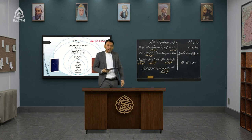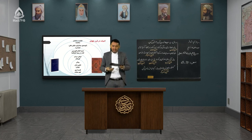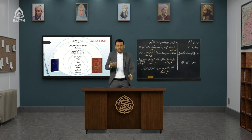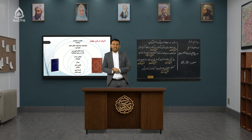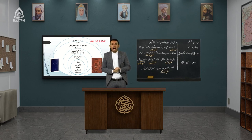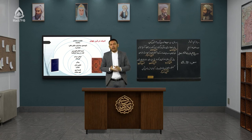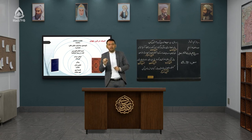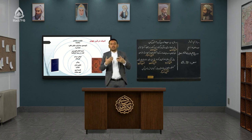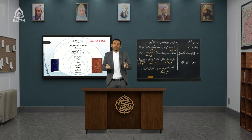رودکی بلخی داستانی دارد مربوط به قصیده بوی جوی مولیان. گفته شده که در دوره سامانیان، امیر اسماعیل بن نوح سامانی — یکی از امرای بزرگ سامانیان — که پایتخت حکومت سامانیان شهر بخاراست، برای تفریح وارد هرات می‌شود و در آن مدتی زندگی می‌کند.